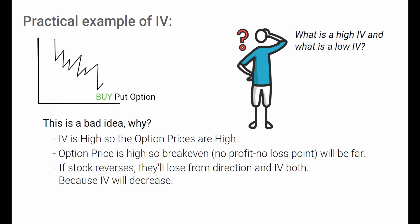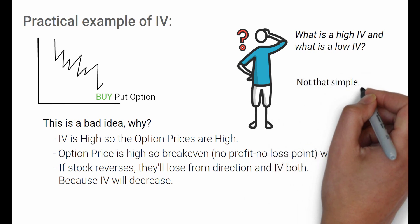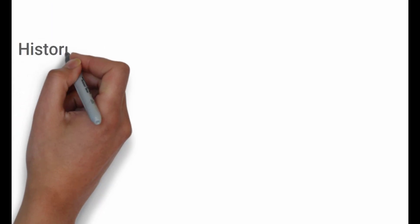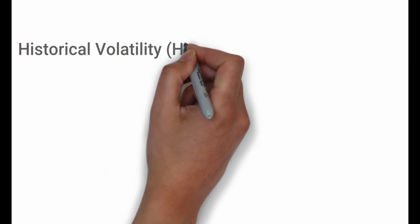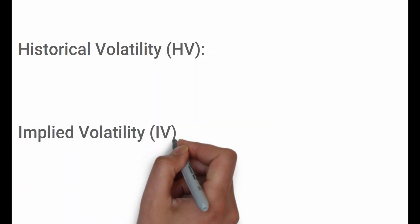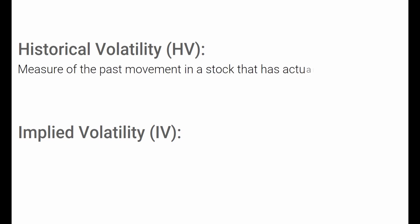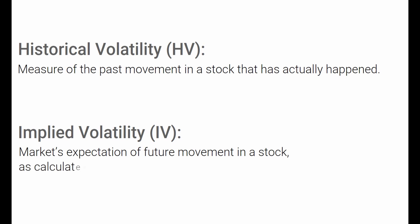How much IV is high IV and how much is low IV? There is no easy answer — it is a little complicated and we will cover this in future episodes. Historical volatility is the measure of past movement in a stock that has actually happened, whereas implied volatility is the market's expectation of future movements in a stock, as calculated from its option prices.